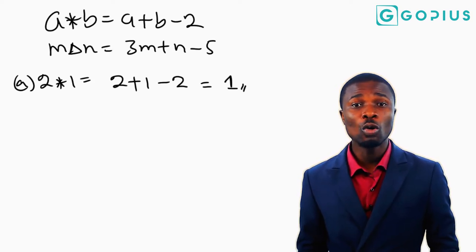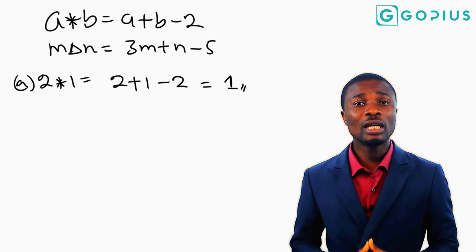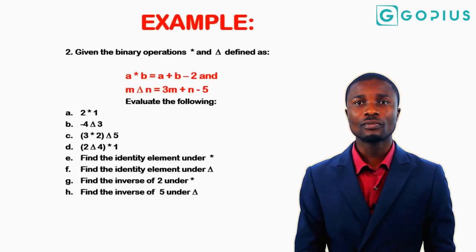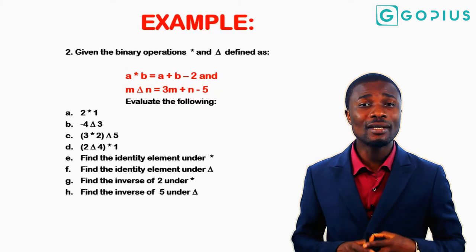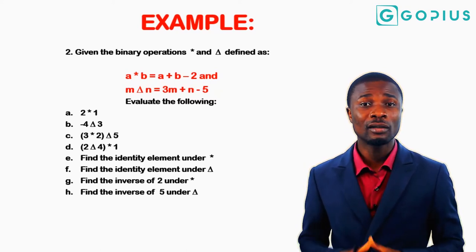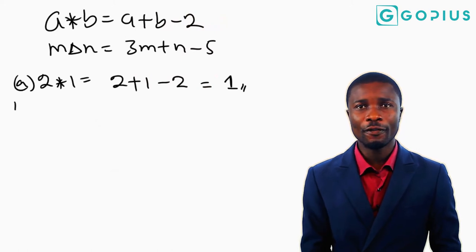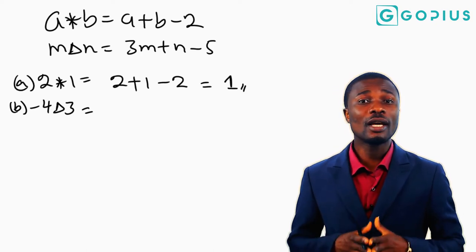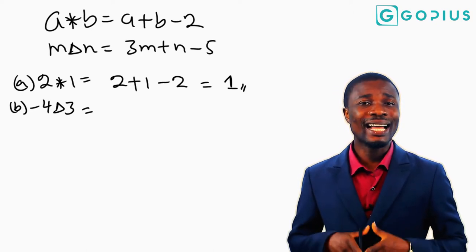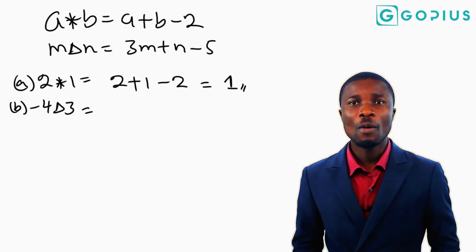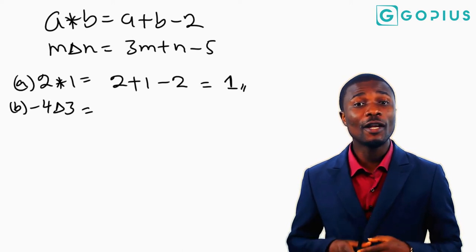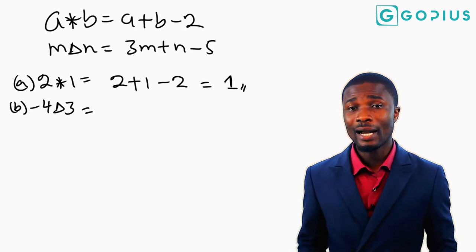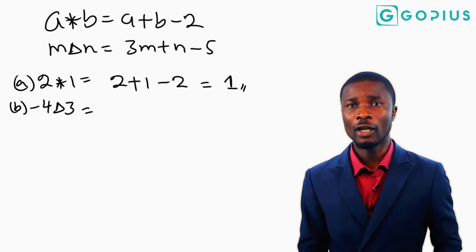So 1 is the value for 2 star 1 using the binary operation a star b defined as a plus b minus 2. The next question is b: evaluate minus 4 delta 3. For this we use the second binary operation delta, where m delta n equals 3m plus n minus 5. Minus 4 is the value for m and 3 is the value for n.